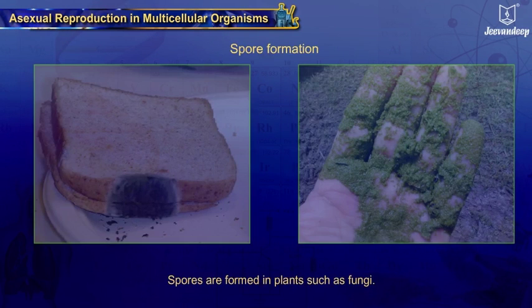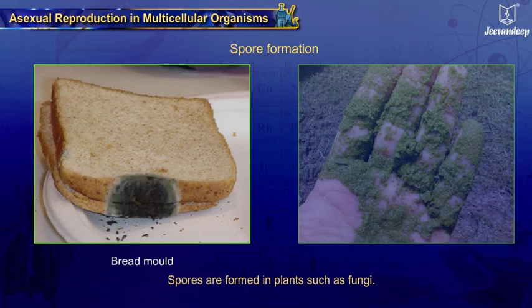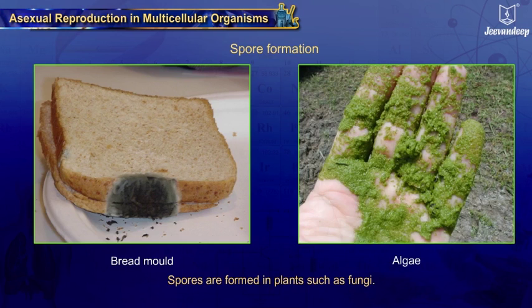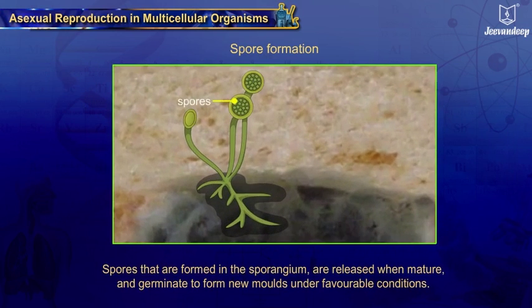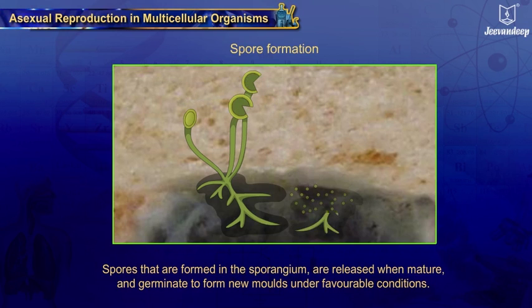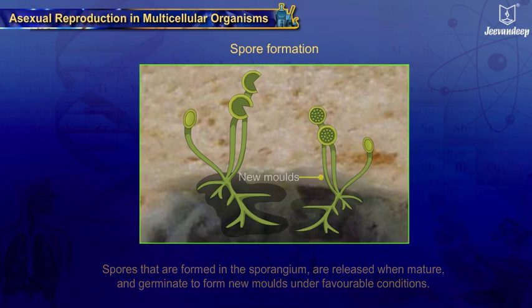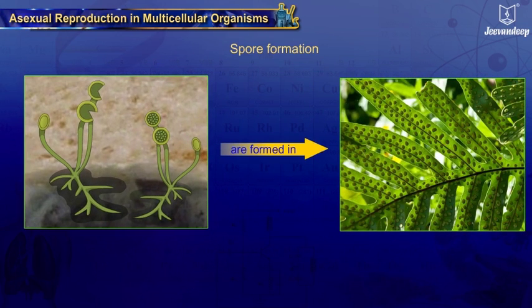Spore Formation: Spores are formed in plants such as fungi — e.g. bread mold or mucor — and certain algae. In molds, the spores formed in the sporangium are released when mature and germinate to form new molds under favorable conditions. Spores are also formed in ferns.